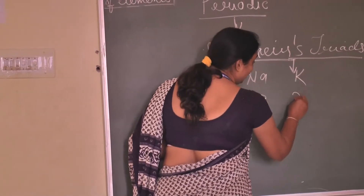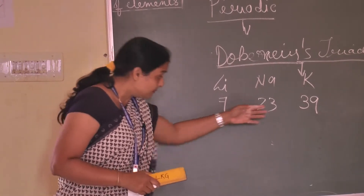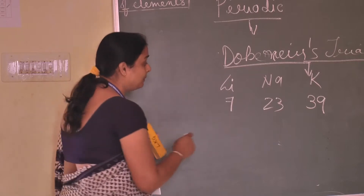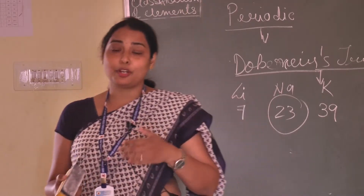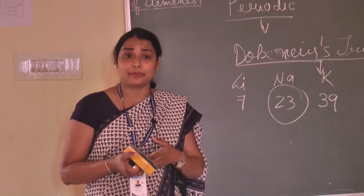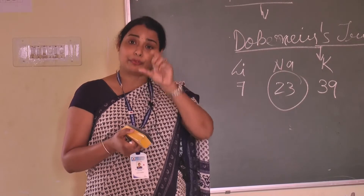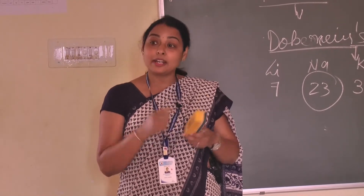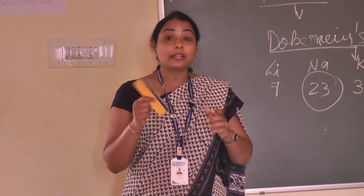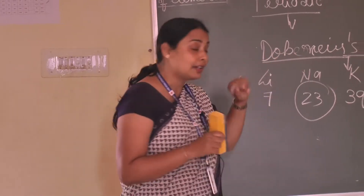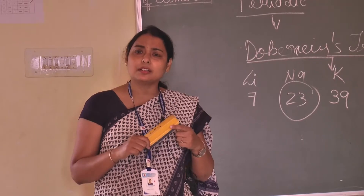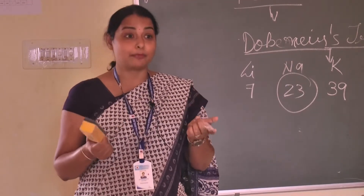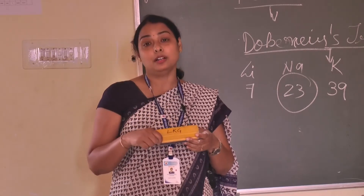He said that taking these three elements, he would find the midpoint of that particular element. But it also failed — because when doing additions and going in increasing or decreasing order, somewhere a criterion arises where we are not able to work it out. Like balancing equations — sometimes it is easy, but sometimes we cannot balance, and we call it a skeleton reaction. Similarly, Dobereiner thought that by doing this he would arrange elements by increasing atomic mass, but he failed because for some elements he was not able to calculate the atomic mass.